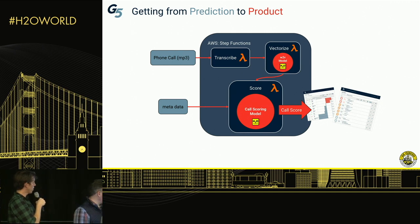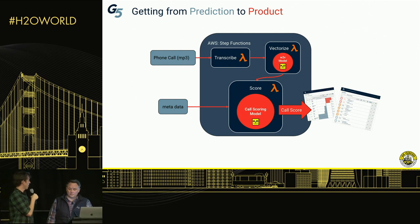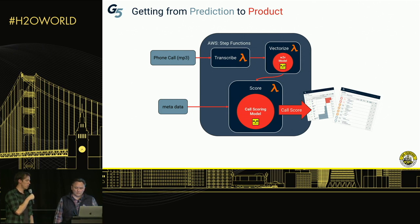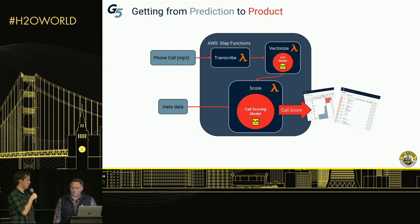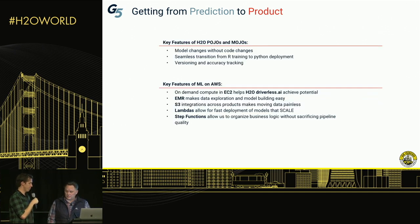We run 109,000 calls through that and come up with our training set, and that same Lambda is running in production to prepare things for the prediction. We go from phone call to transcription to feature building and vectorization. The metadata we augment that with, and then call by call we score those calls, and they end up in our dashboard for our clients as actionable data to make decisions based off of.